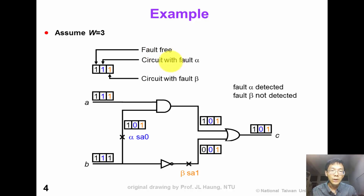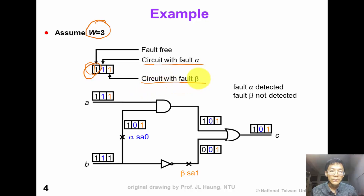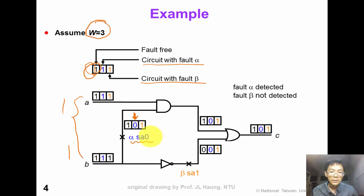Here is an example. Assume W equals 3, so we have three bits for fault simulation. The first bit is reserved for good simulation. The second bit represents fault alpha, and the third bit represents fault beta. In this circuit, assume we apply pattern 1-1. For the faulty circuit, the second bit is changed to 0 because this bit represents fault alpha stuck-at-0. The third bit is flipped to 1 to represent fault beta stuck-at-1.